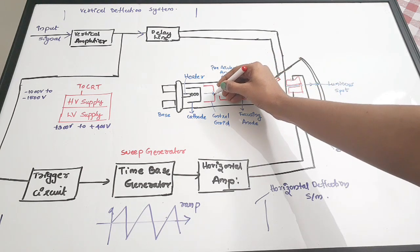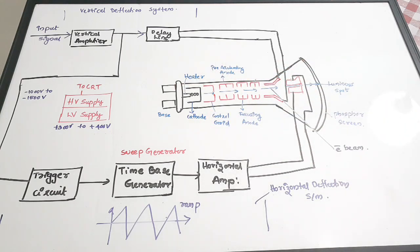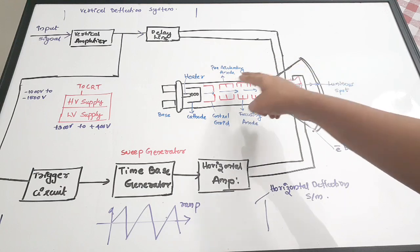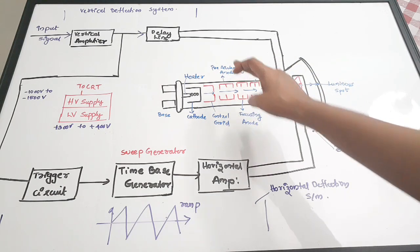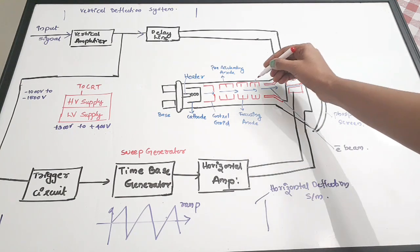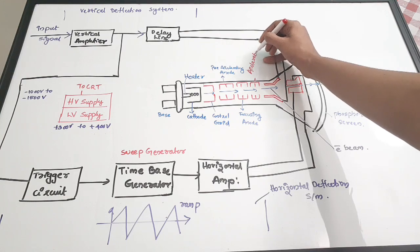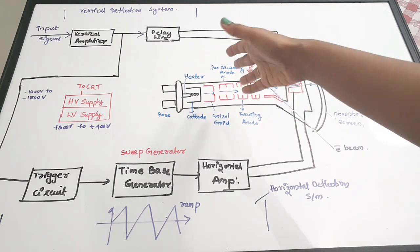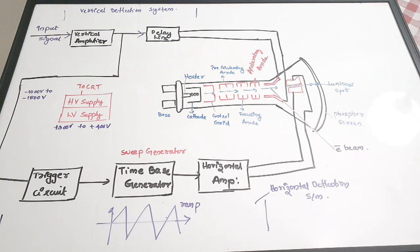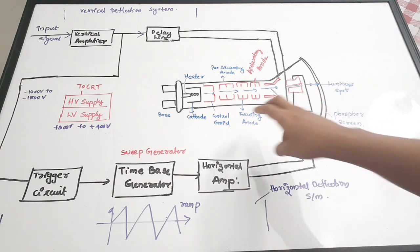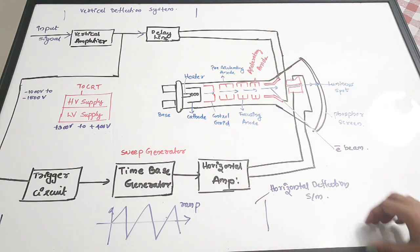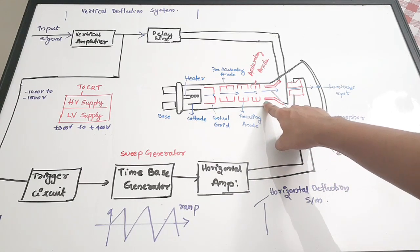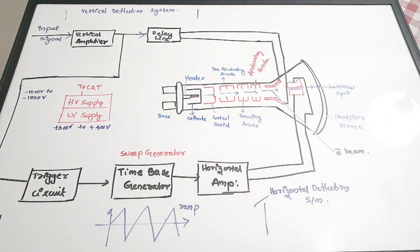After passing through the control grid, the electron beam passes through three pairs of anodes: a pre-accelerating anode, a focusing anode, and an accelerating anode. The purpose of these three anodes is to produce a highly focused and highly accelerated beam of electrons.